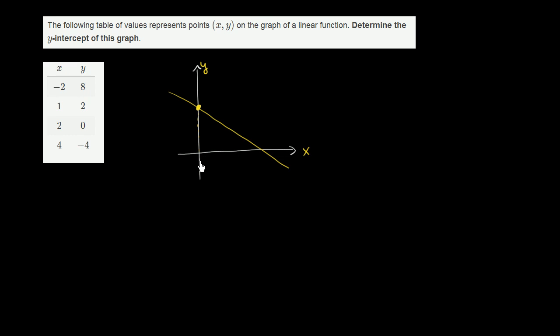Well, at the y-intercept, x is going to be equal to 0. So this is the point 0 comma something. And so when people are talking about what is your y-intercept, they're usually saying, what is the y-coordinate when x equals 0? So we're really trying to figure out what is the y-coordinate when x equals 0.